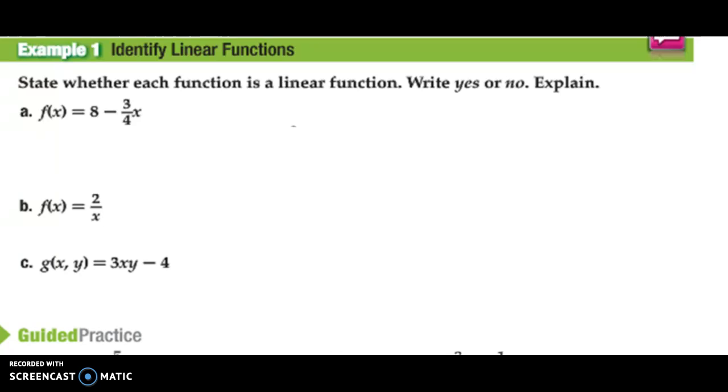If we look at these ones, letter a: f(x) equals 8 minus 3 fourths x. Now, at first it might say that's not in the right form. But I could write it as f(x) is equal to negative 3 fourths x and then plus 8. All I did was switch the direction of variable and constant. So this one is a linear function.